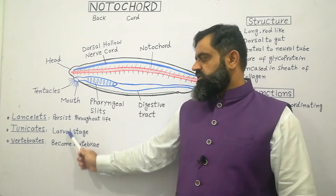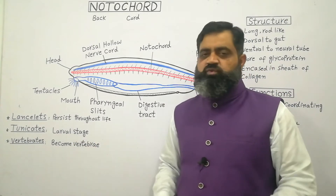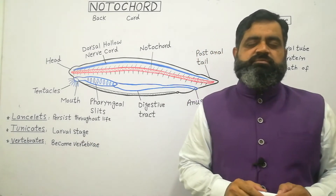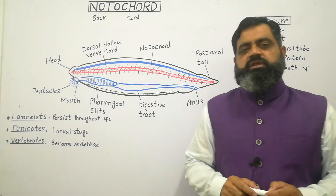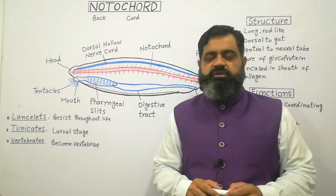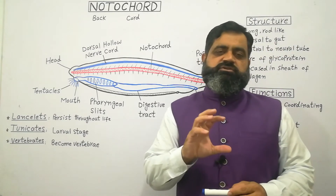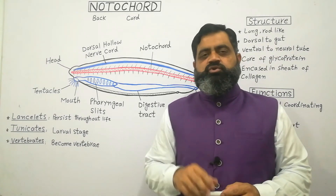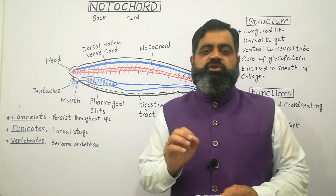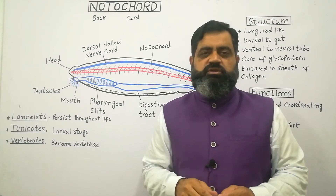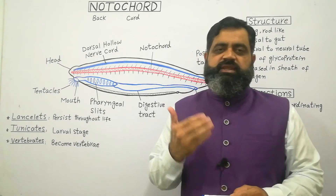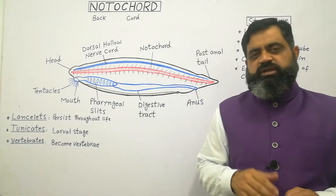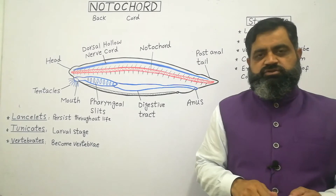While in some other animals like vertebrates — including fish, amphibians, reptiles, birds, and mammals — this notochord changes into vertebrae or the vertebral column. As you know, the vertebral column is the main axis of our body.